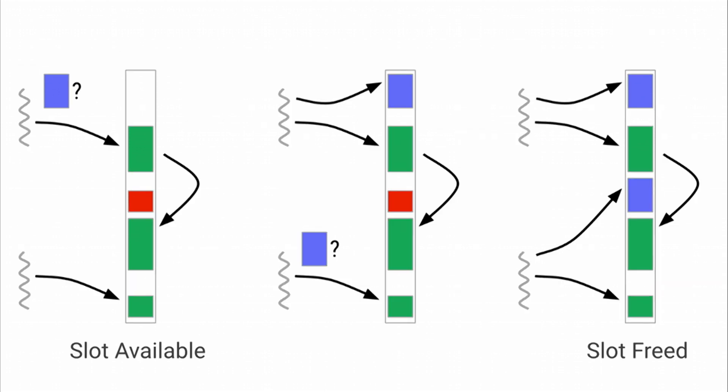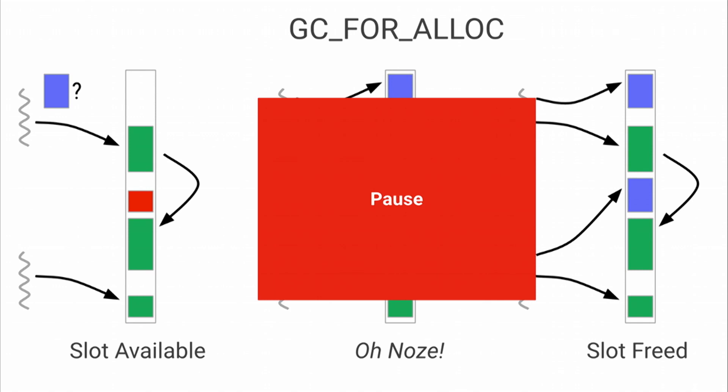The more problematic situation is GC for alloc: a new object comes in, we walk down the heap looking for space, and there is none. Then we have to run a GC synchronously — stop the world with a huge pause — to free up what's needed to fit the new object in. GC for alloc can take 10 to 20 milliseconds on Dalvik, which is easily more than a frame, so you'll potentially skip an animation frame and cause a hiccup. Nothing else can run during that pause, so in general it's a good thing to try to avoid.